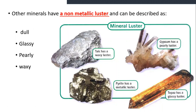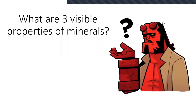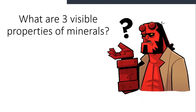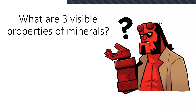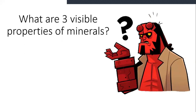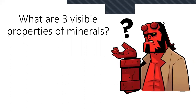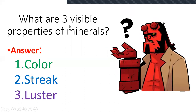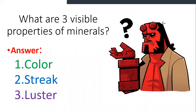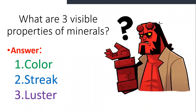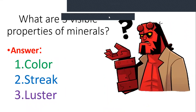In non-metallic luster we had many types: dull, glassy, pearly, and waxy. So what are the three visible properties of minerals? Color, luster — and the third starts with 'S' — streak. That's right, well done. So the three visible properties are color, streak, and luster. Those are things we can identify with our own eyes.